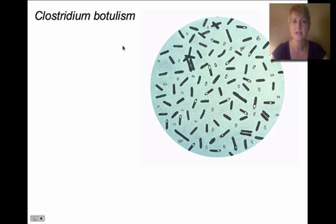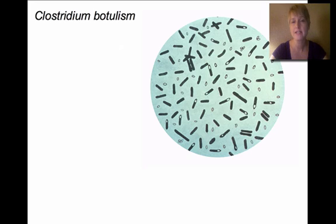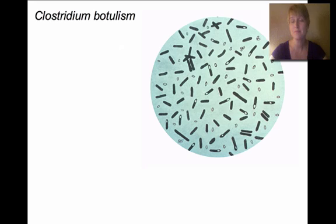Clostridium botulinum is a rod-shaped bacteria, as you can see from the picture. Botulism is food poisoning and we see this a lot in dented cans — if a small hole is in the canned food and air gets in, botulism will form inside. Interestingly, the same bacteria is what is used when women get Botox injections.